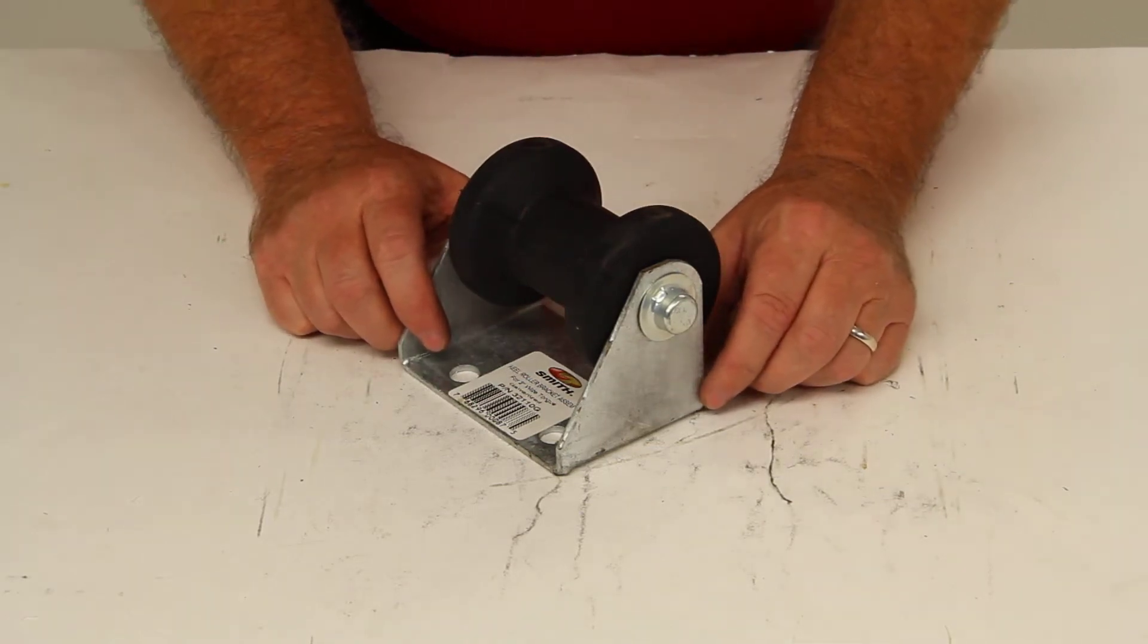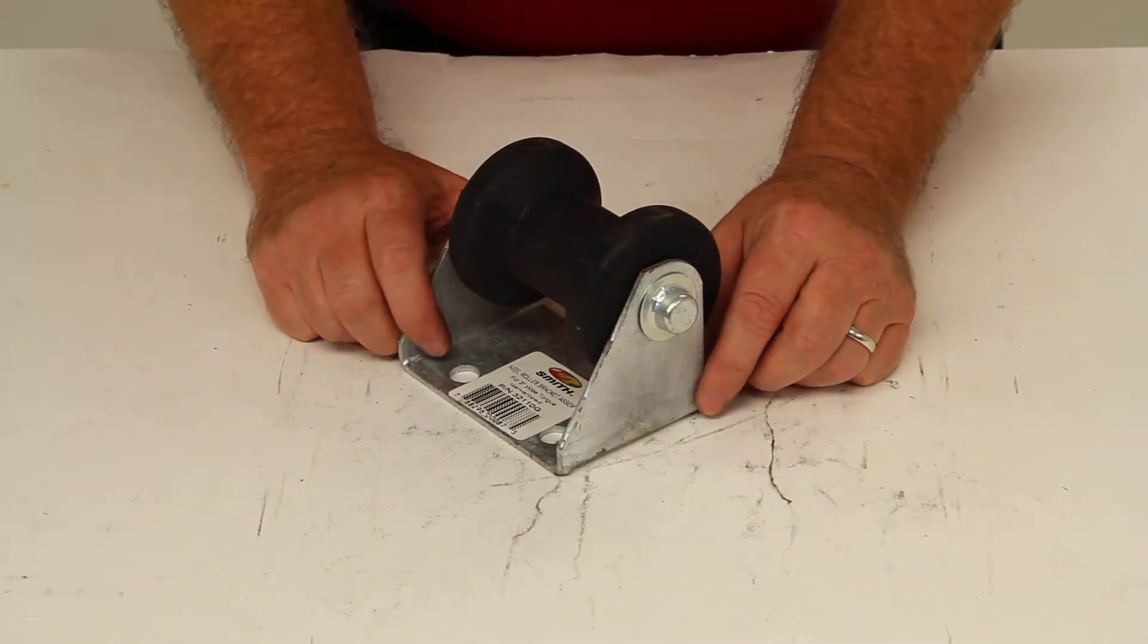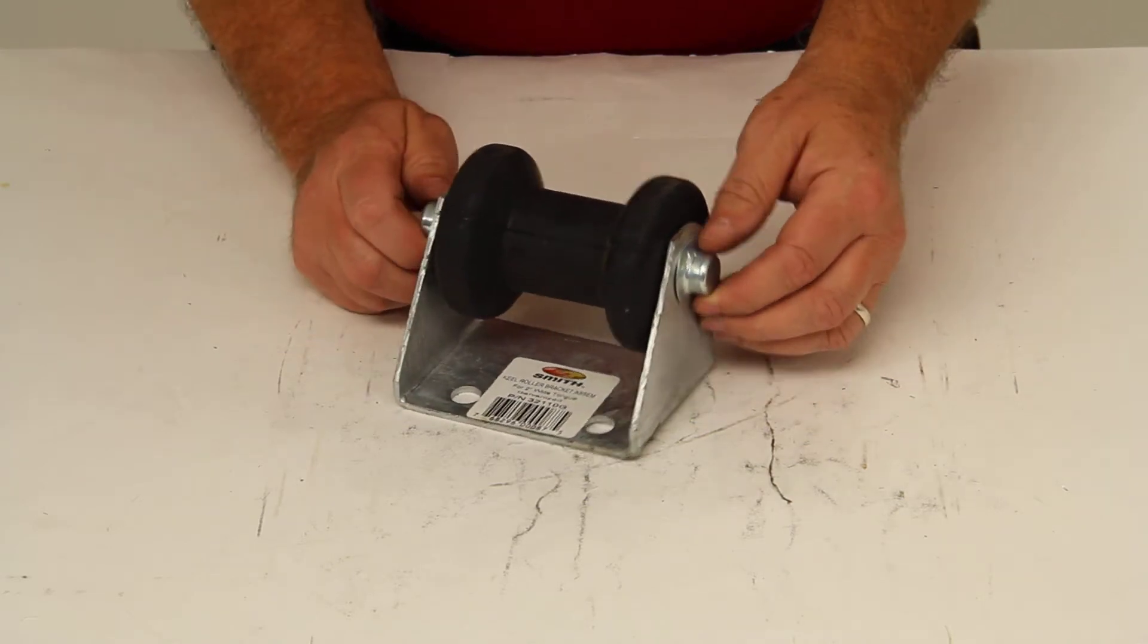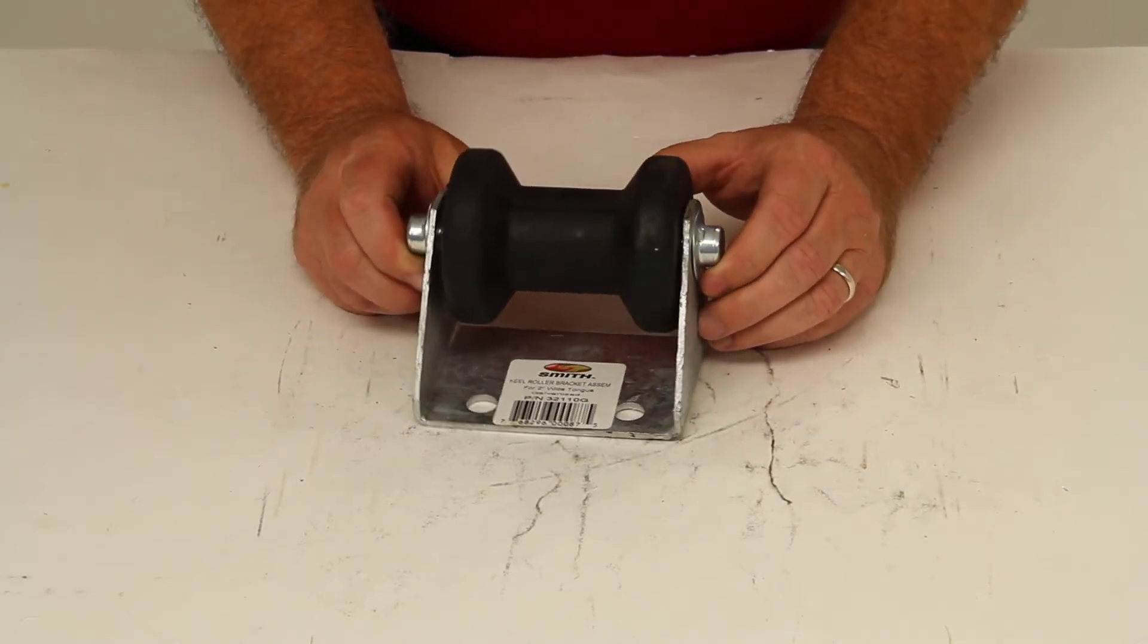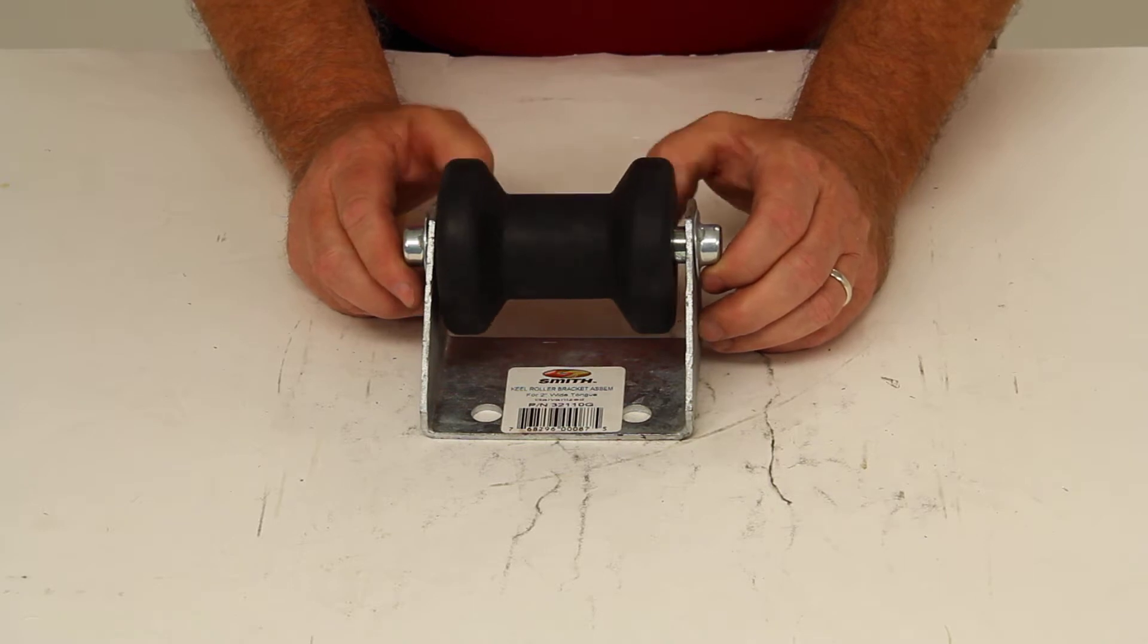Today we're going to review part number CE-32110G. This is the CE Smith Offset Spool Roller Assembly for boat trailers.